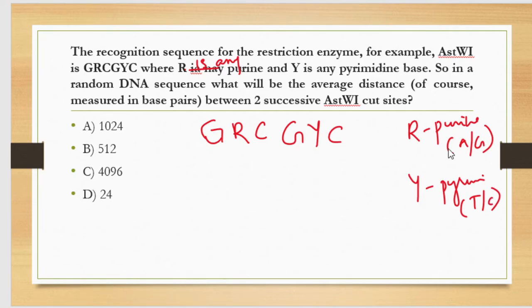So in a random DNA sequence, what will be the average distance, of course measured in base pairs, between two successive cut sites? It is already given that this particular enzyme has this sequence. There are six positions: one, two, three, four, five, and six. In order to calculate the distance between two, you need to use probability.